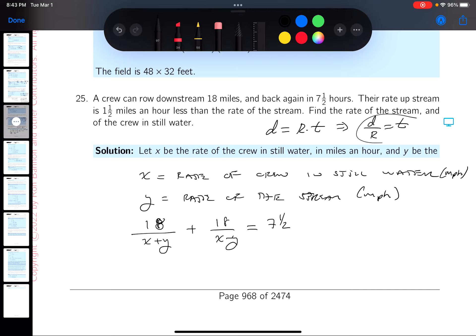If it's against current it's the rate that the crew can go in still water minus rate of the current. It's 18 miles up and down, 7.5 hours total.